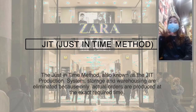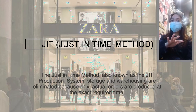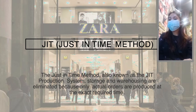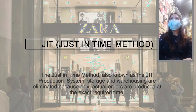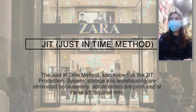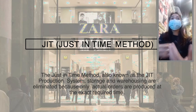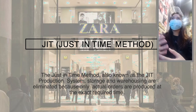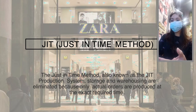The just-in-time method is also known as the perfect inventory system. You only create products if there is demand — you only produce what is ordered. You don't produce items for which there is no demand. Products are only made when it is necessary.